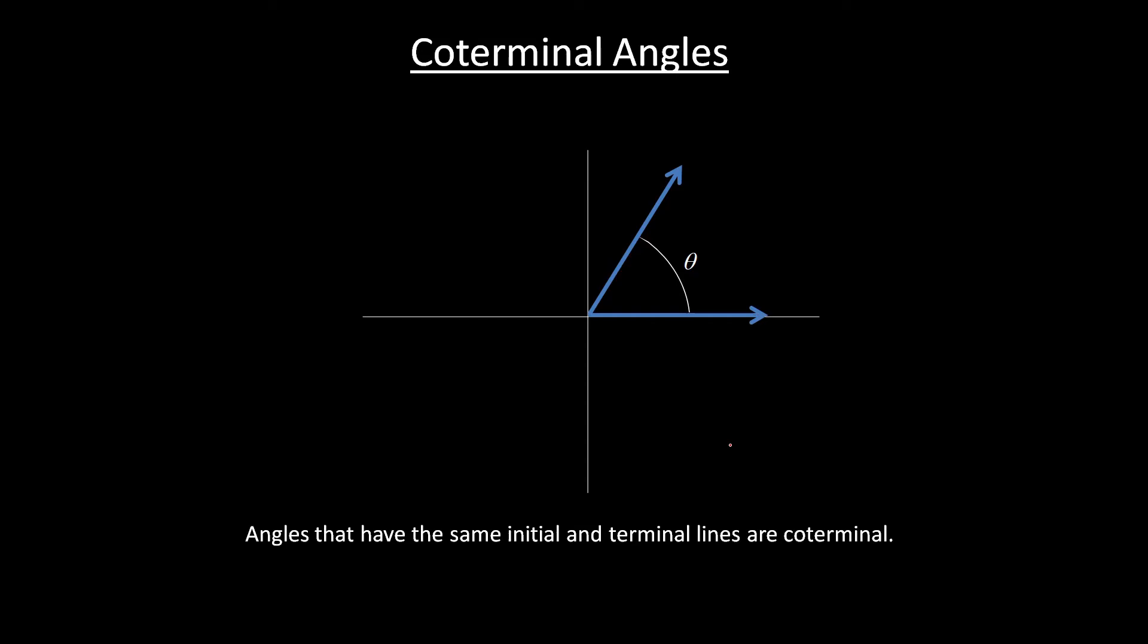So for instance, let's say this was 30 degrees here. Well, an angle that's coterminal means we start on the same initial. Now we can't do 30 degrees because that one's already taken. So it means we're going to have to go all the way around and come back again. And so here we went 360 degrees because we did one full revolution, and then we did another 30 degrees to get to the same terminal. And so this angle then would be 390.